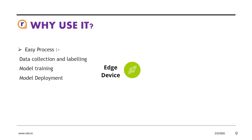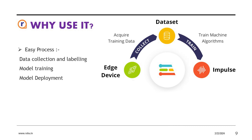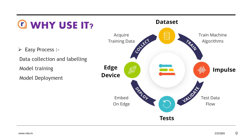What is the process of using Edge Impulse? We collect data using the device, train a model against that collected dataset, and once the model is generated, we can test it against the collected data to see if the model is working properly. Then we can easily deploy it on that particular device. It's that easy.